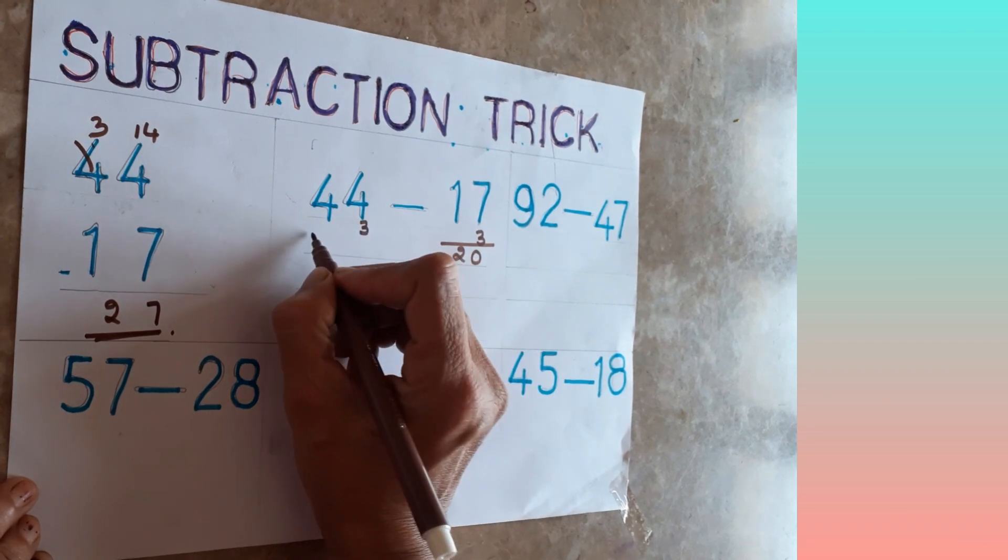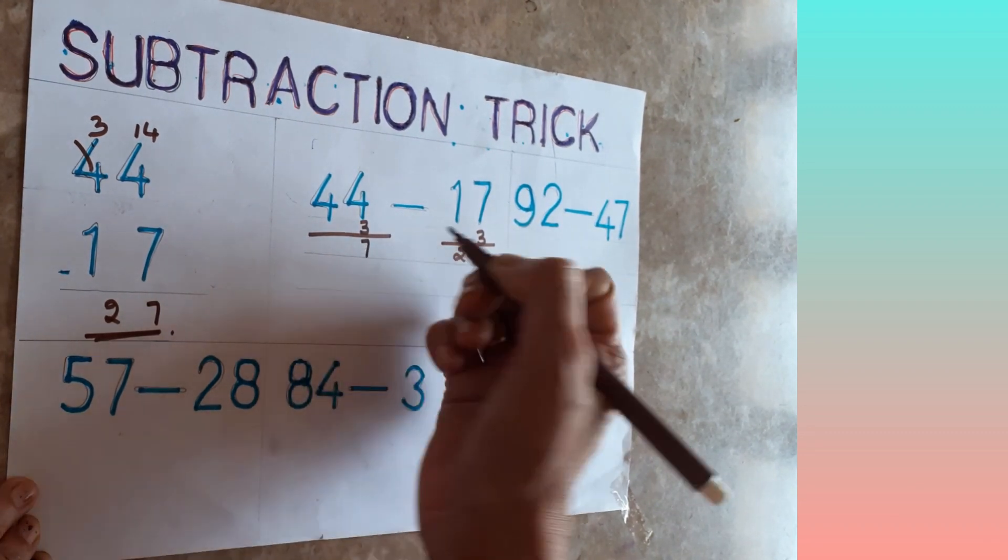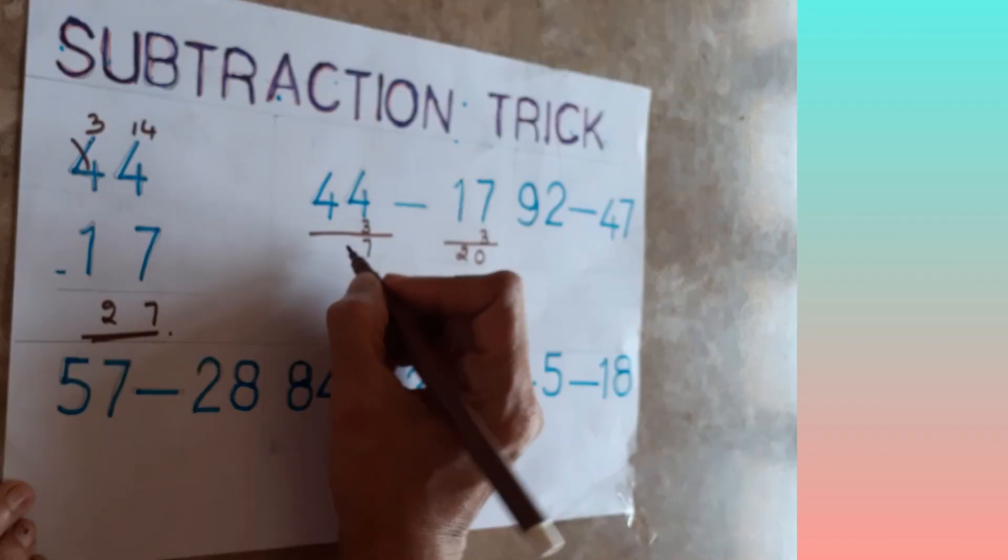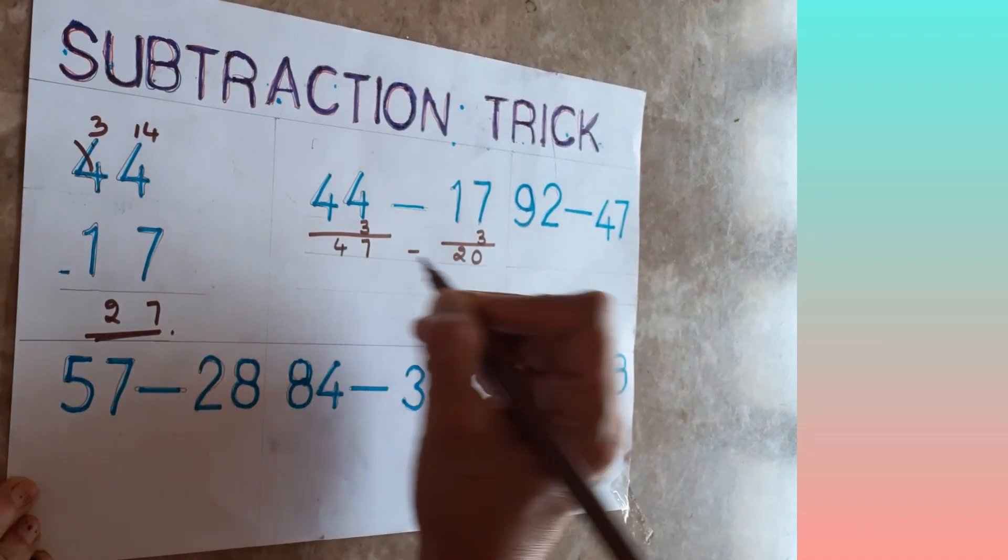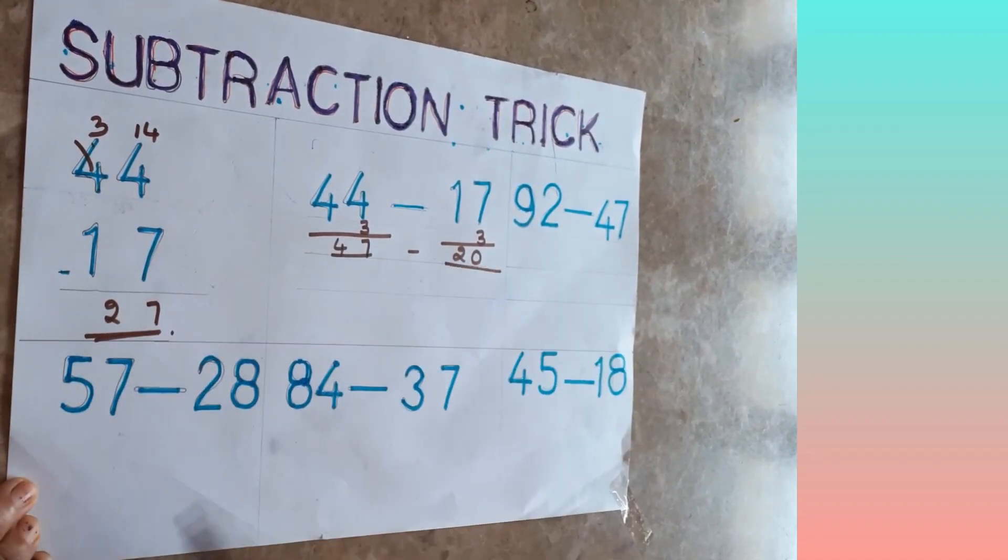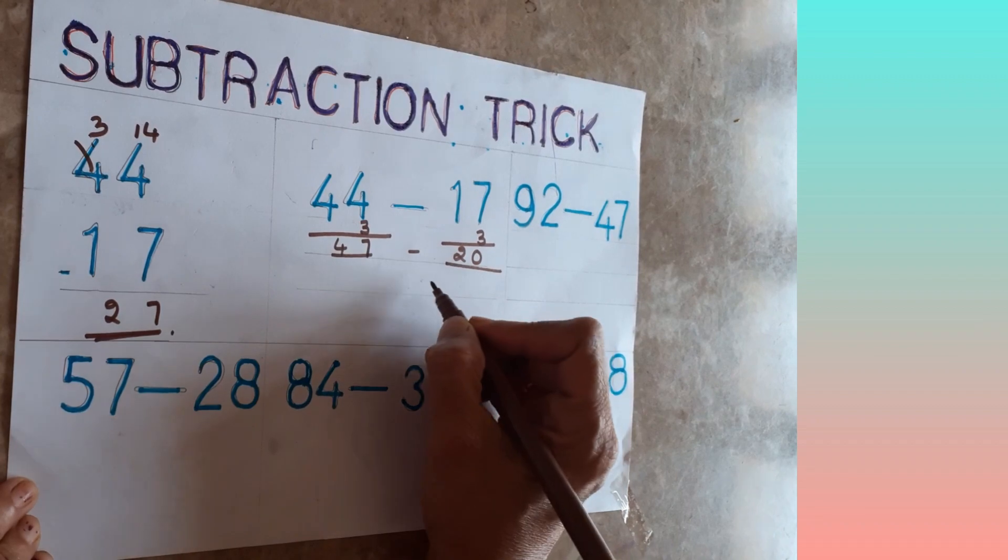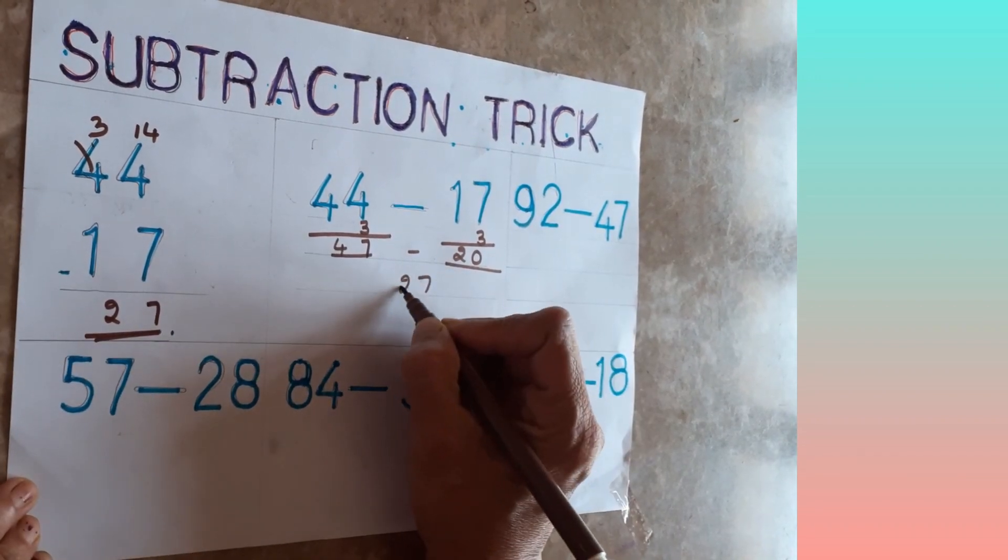4 plus 3 is 7, and 4. Now you do the subtraction. It will be easy for you. No borrowing will be there. 7 minus 0 is 7, 4 minus 2 is 2. That's all is the answer.